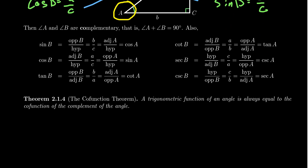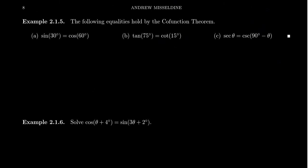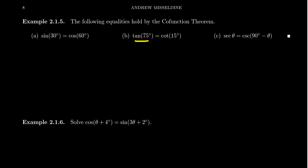This is called the cofunction theorem: a trigonometric function of an angle is always equal to the cofunction of the complement of the angle. For example, sine of B equals cosine of A when A and B are complementary angles. Specifically, the cofunction theorem tells us that sine of 30 degrees equals cosine of 60 degrees — 30 and 60 are complementary angles, and sine and cosine are complementary functions.